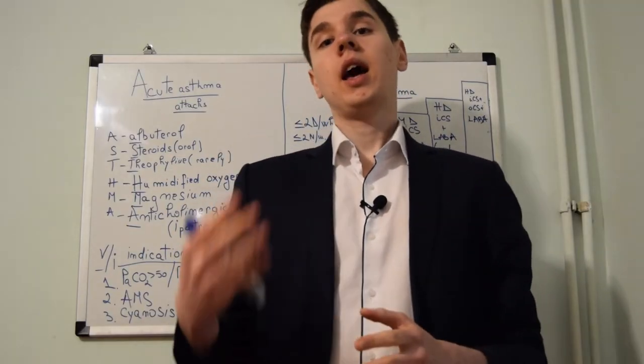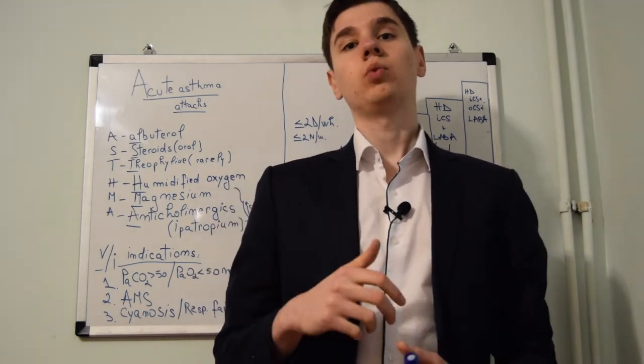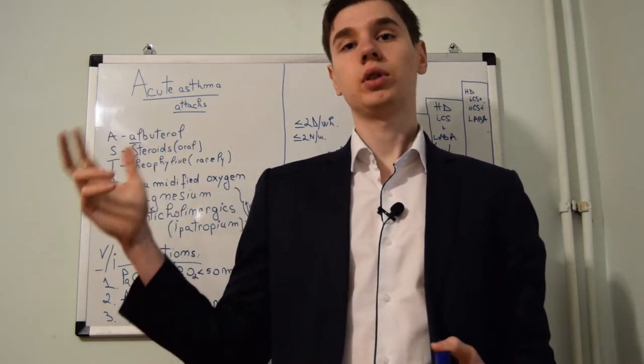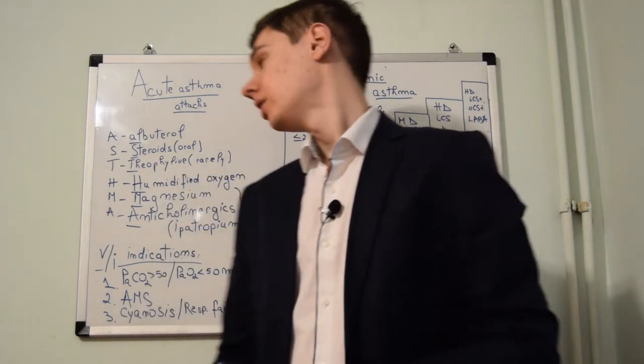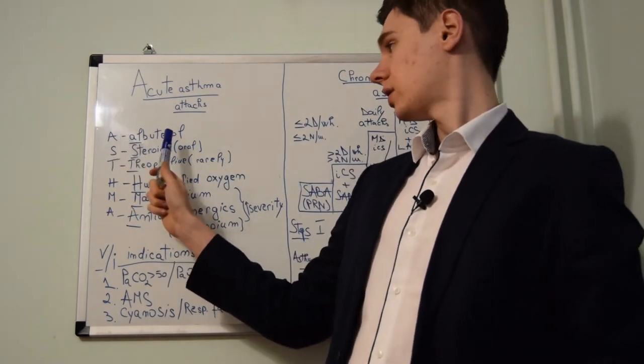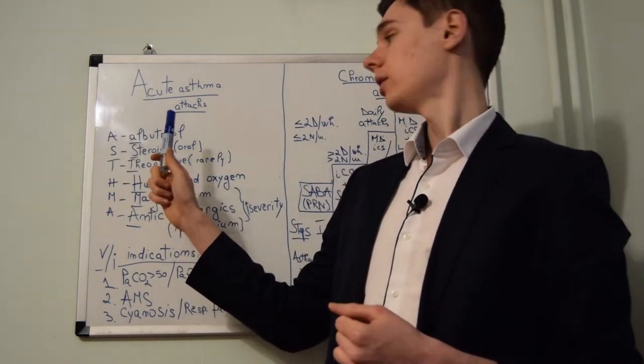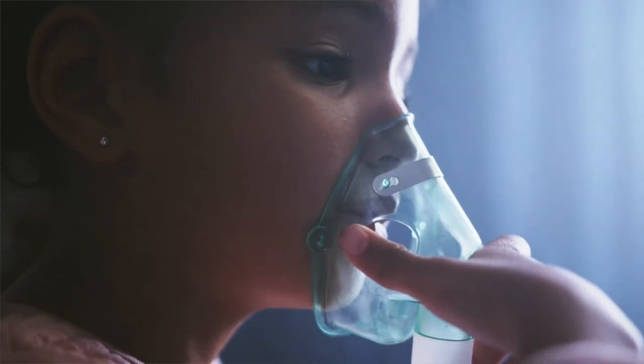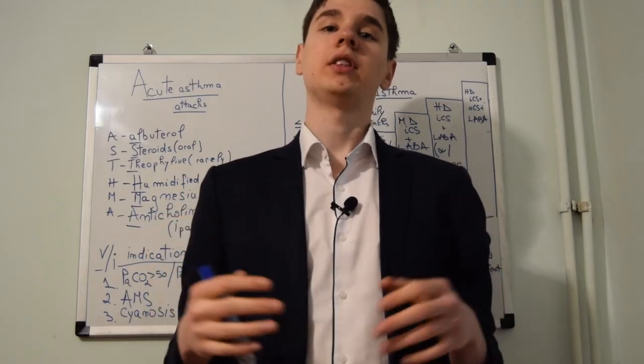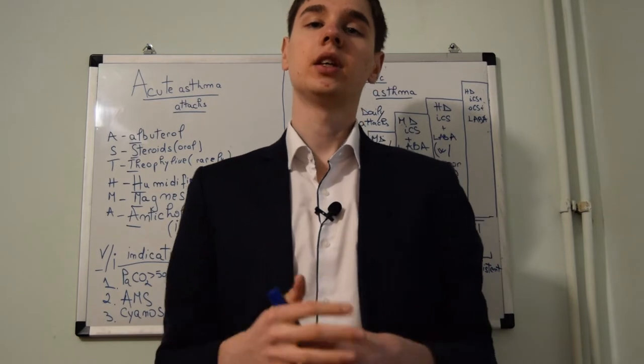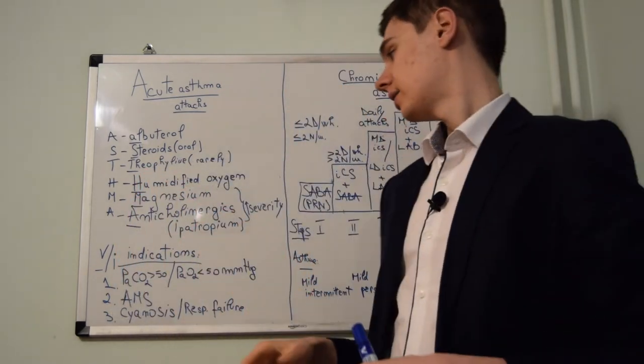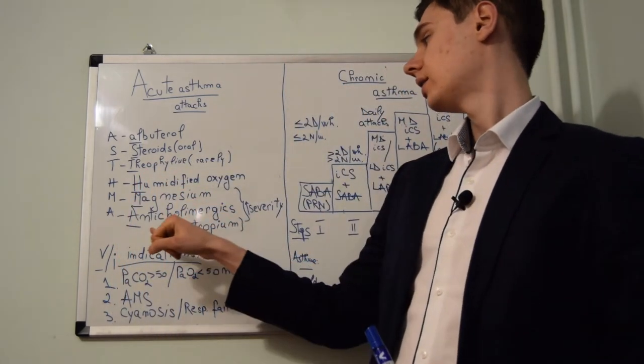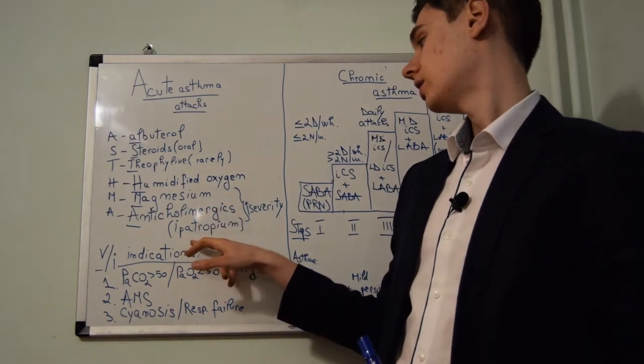In any episode of acute asthma we use three treatments: albuterol, steroids preferably oral, and humidified oxygen. However if the asthma attack is severe we might add magnesium and anticholinergics such as ipratropium.